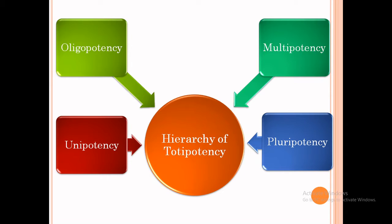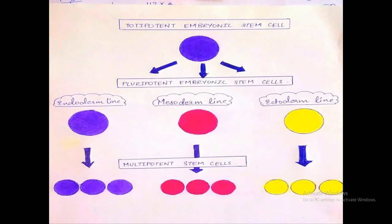This is the branches of totipotency. Totipotent embryonic stem cells differentiate into pluripotent embryonic stem cells, which can be divided into the endoderm line, mesoderm line, and ectoderm line. For example, in mango, the outer layer is ectoderm, the middle layer is mesoderm, and the inner layer is endoderm. Pluripotent embryonic stem cells then differentiate into multipotent stem cells, which can develop into a limited number of cell types in a particular lineage, forming only a particular part of the plant.